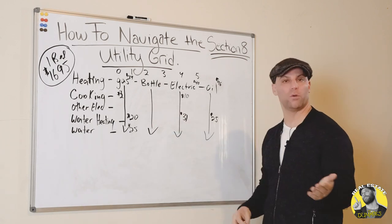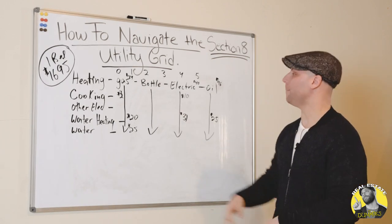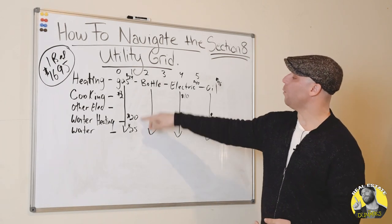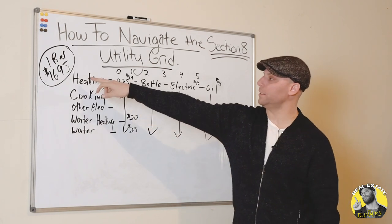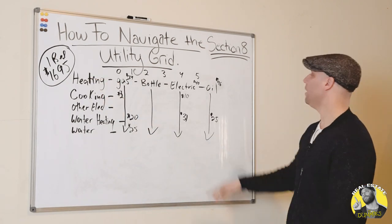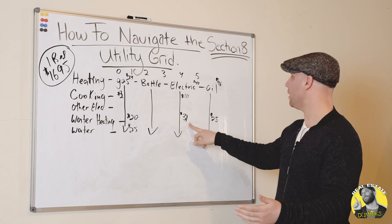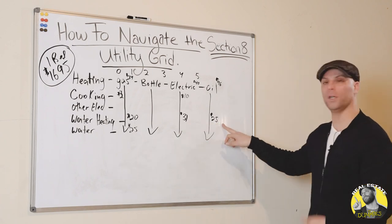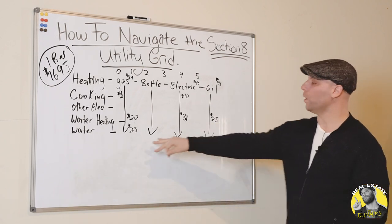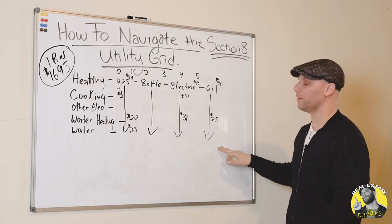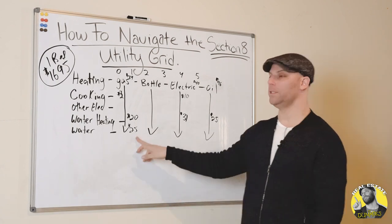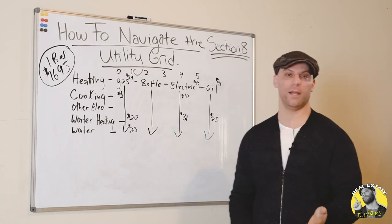Other electric is across the board the same. Hot water: if it comes from gas you deduct $20 from the $1,695; if you have electric you deduct $31; if it's oil you deduct $25. Water is $25 across the board. In a multifamily you wouldn't deduct the $25 because you as the landlord have no other way — you can't sub-meter the water, so you're going to be paying the $25.